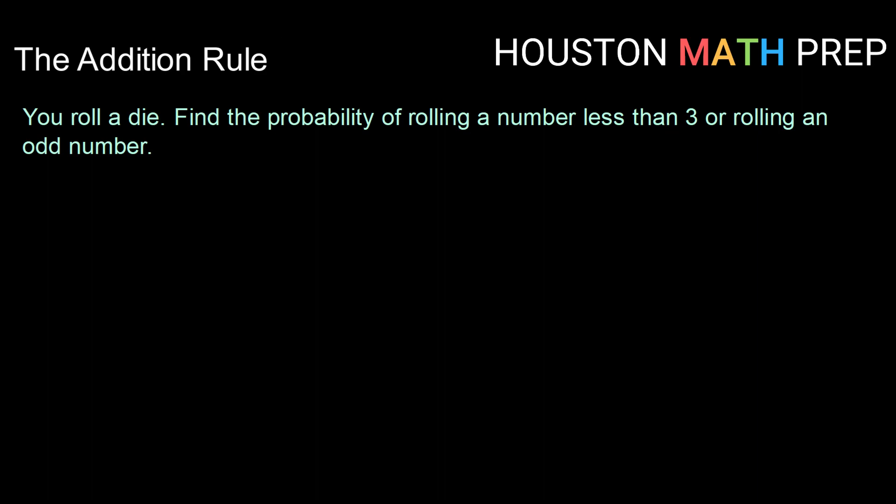Alright, let's look at another example. You roll a die. You have a six-sided die and you roll it, let's remember our sample space for that. We can roll a 1, 2, 3, 4, 5, or 6. Find the probability of rolling a number less than 3 or rolling an odd number.